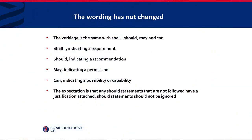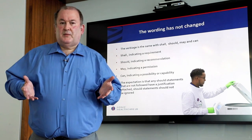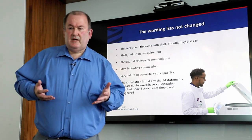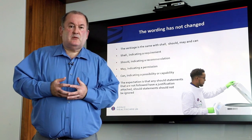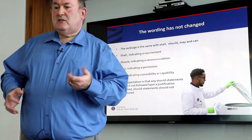The verbiage is the same: shall, should, may, and can. 'Shall' is a requirement — that's your critical non-conformance in ISO terms, or in UKAS terms. 'Should' indicates a recommendation; 'may' indicates permission; 'can' indicates possibility or capability. The expectation is that any 'should' statements not followed have a justification attached — a 'should' statement should not be ignored. If it says 'should' and you don't follow it, you need to explain why. You won't get a critical non-conformance, but during inspections we really want to understand the thought process — it's not an 'ignore me.'